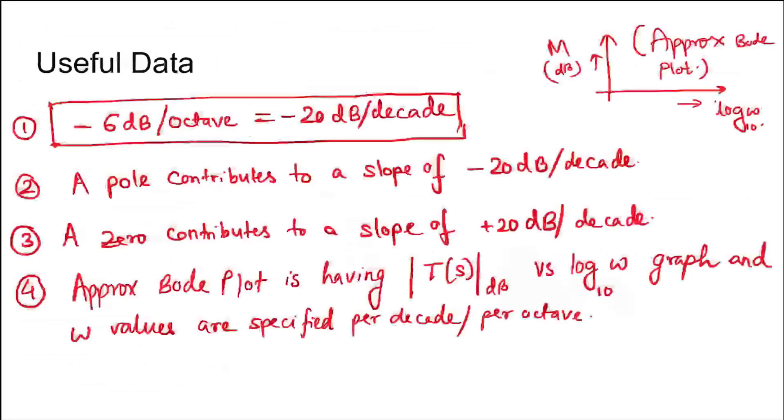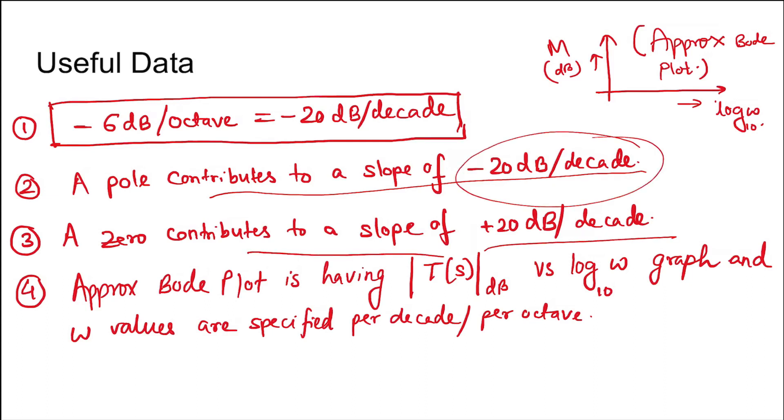A pole contributes to a slope of -20 dB per decade, and a zero contributes to a slope of +20 dB per decade. -20 dB per decade means -6 dB per octave, or +20 dB per decade means +6 dB per octave.